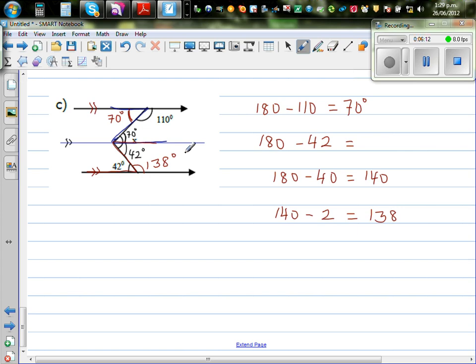So this X would be 70 degrees plus 42 degrees, which is 112 degrees.